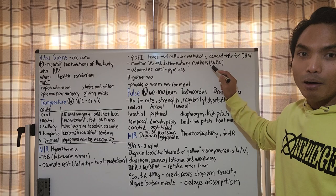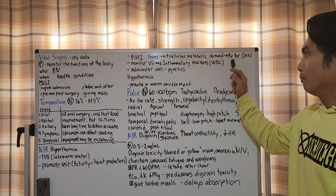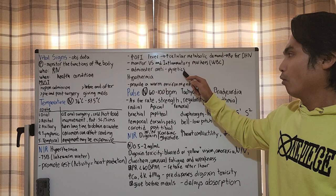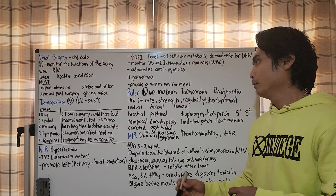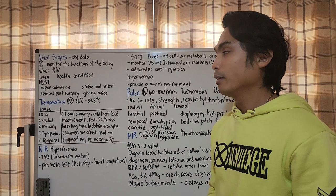Monitor vital signs and inflammatory markers like WBC. Normal range is 4,500 to 10,000 per microliter. Administer antipyretics like paracetamol - this is a dependent nursing action. For hypothermia, our main responsibility is to provide warm environment, offer the client dry blanket or warm clothes.